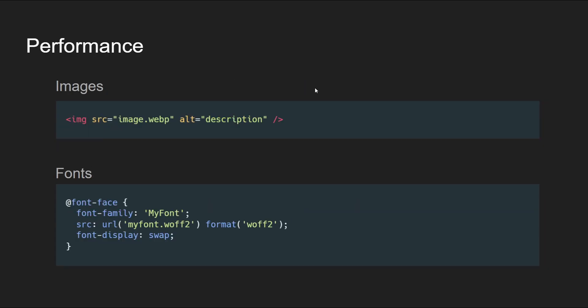For images, you can discuss optimizing image loading through techniques like compression, responsive images, and lazy loading, which can significantly enhance page load times and overall performance. For fonts, this involves optimizing font delivery by selecting efficient formats that provide better compression, using font loading strategies like font-display, and minimizing font file sizes. Your font files should contain only the fonts your web application actually uses — just download the subset of the font file that's necessary, not an entire 5–6MB font file.